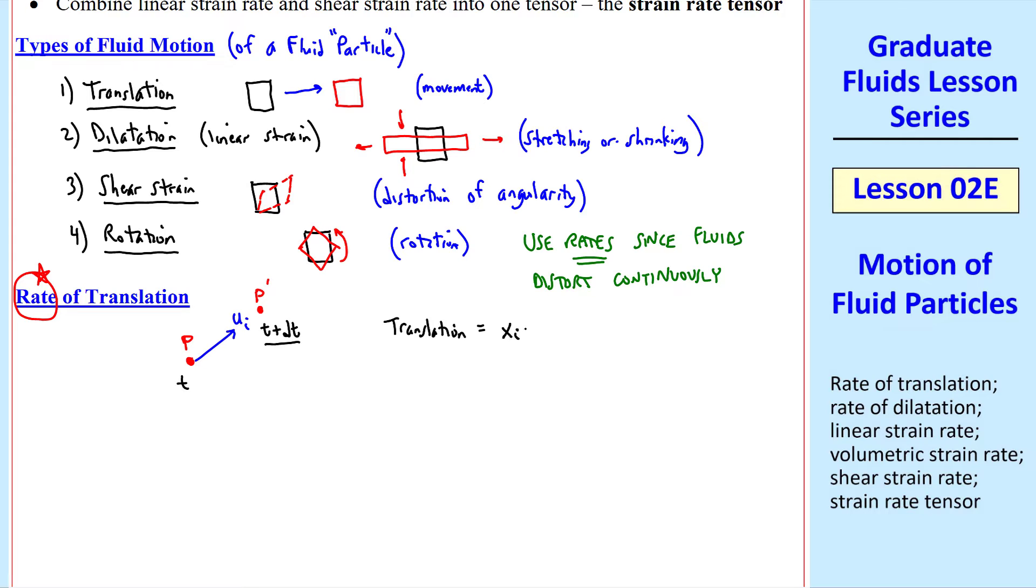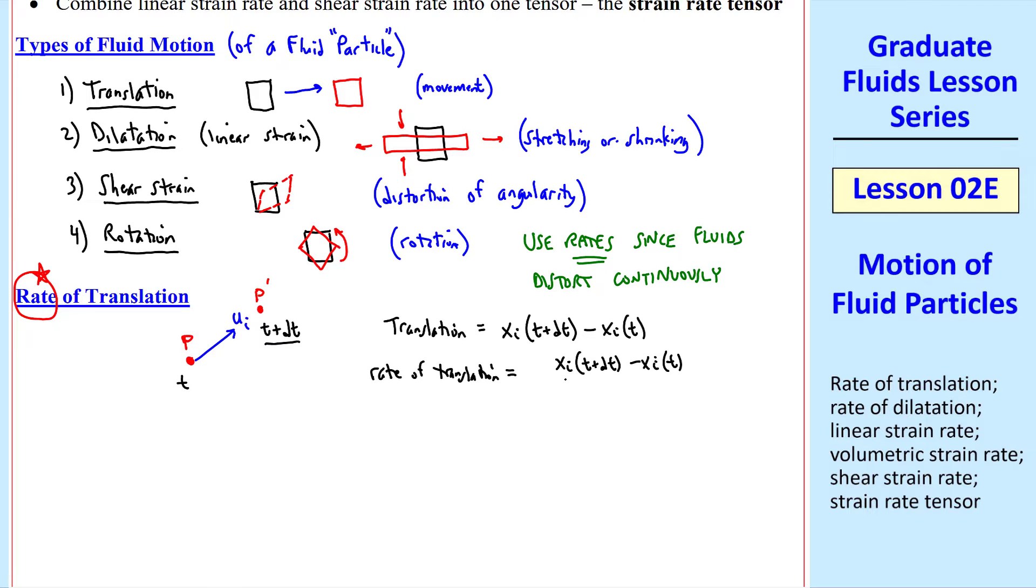Translation would be defined as xi at t plus dt minus xi at t, where xi is the position vector. So the rate of translation is the translation divided by dt as dt gets small. In other words, we take the limit as dt goes to zero of this quantity. Well, this is the fundamental definition of a derivative, or dxi dt.